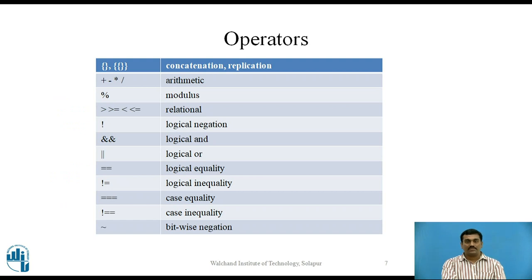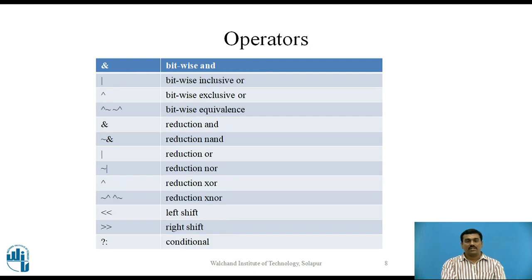Operators are of three types: unary, binary, and ternary. Unary operators precede the operand. For example, the last example in the shown table, i.e. bitwise negation operator, is a unary operator. Binary operators appear between two operands. For example, logical OR, logical AND are binary operators. Most of the operands in this table are binary operators. In this table also, most of the operators are binary operators.